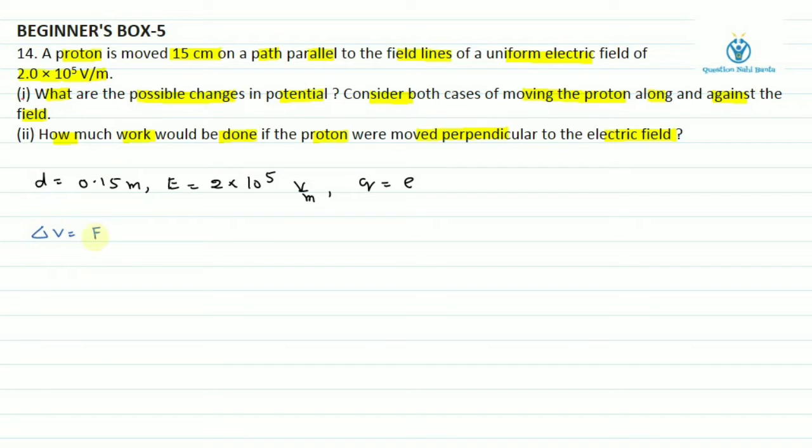So hum jante hai ki hummera change in potential kya hoga. Change in potential hoga e into d agar hum against the electric field jate hai kyonki electric field ke opposite direction me jane par hummera potential badhta hai aur hummera change in potential minus ed hoga agar hum parallel to electric field jate hai. In the direction of electric field potential decrease hota hai.